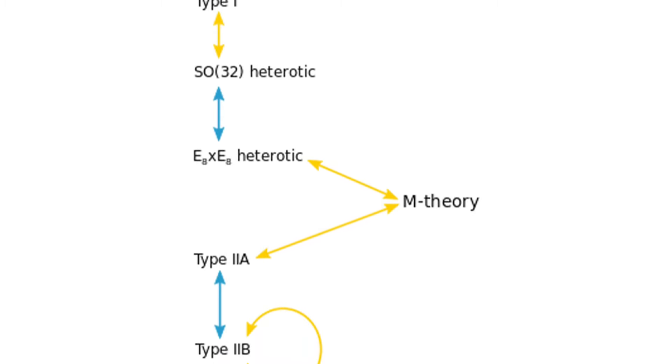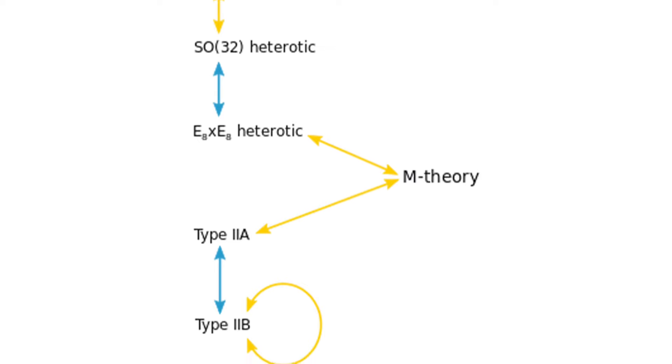S duality hinges on incorporating elements like d-branes and orientifolds. Basically, you can think of both of these dualities as inversions. One inverts the coupling strength, and the other inverts the radius of the extra dimensions after compactifying.